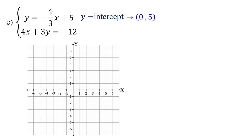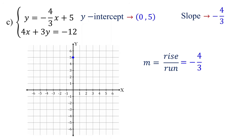The y-intercept of the first equation is the point (0, 5) and the slope is -4/3. As we did in the previous example, we will start by plotting the y-intercept, which is located at (0, 5). Slope is rise over run, and in this case it is -4/3. You can place the negative sign in the numerator — it will not change the value of the slope since they are equivalent fractions.